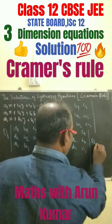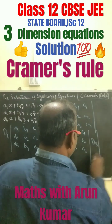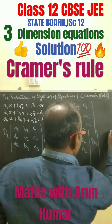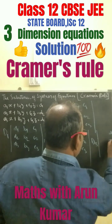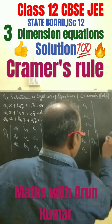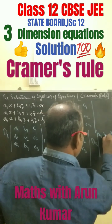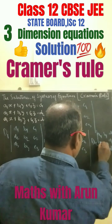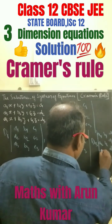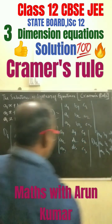In the same way, we have to find out D3, where the third column will be replaced with d1, d2, d3, and the remaining columns will be a1, a2, a3 and b1, b2, b3.